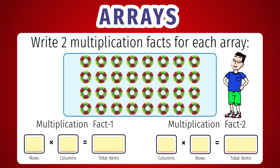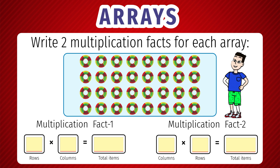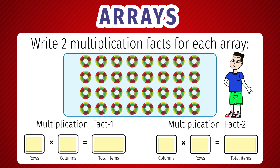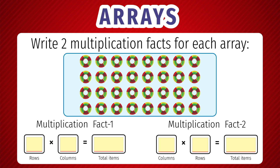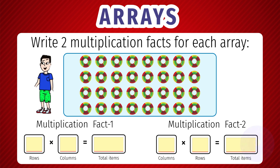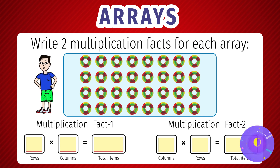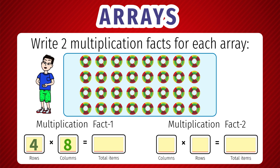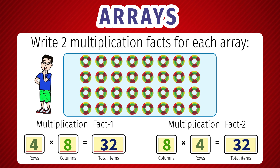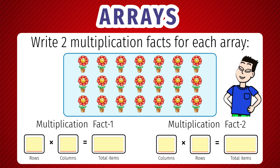Next question. Write two multiplication facts for the array shown. We have 4 rows and 8 columns. Rows into columns and columns into rows. The multiplication facts are 4 into 8 equals 32, and 8 into 4 equals 32.